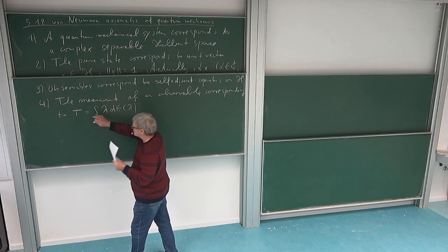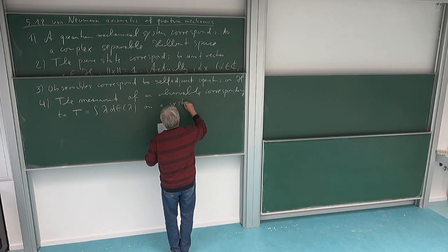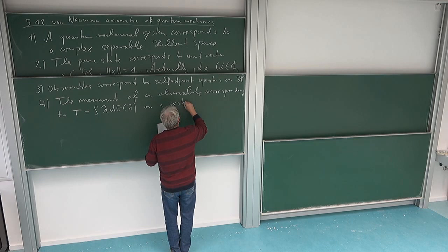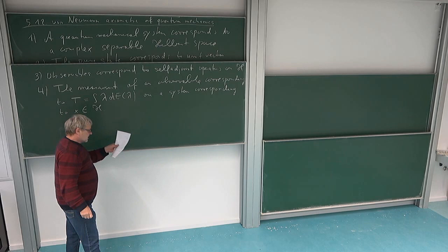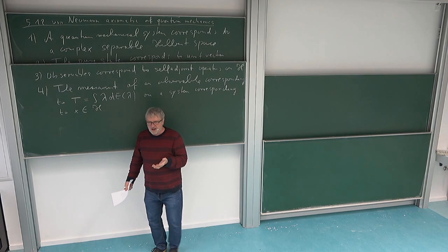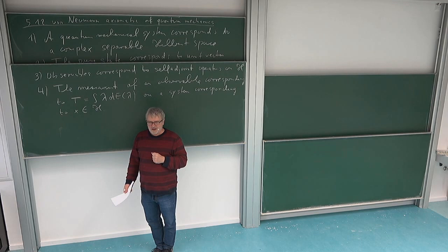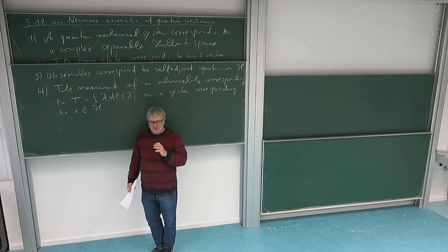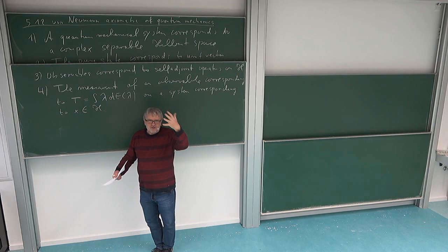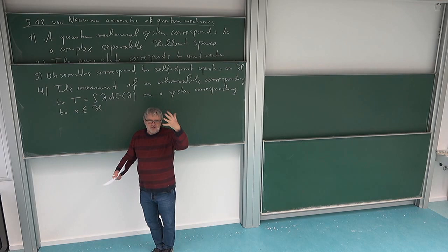I want to do a measurement of an observable corresponding to this self-adjoint operator T, measured on a system described by a unit vector x in my Hilbert space. Now comes the surprise of quantum mechanics: even though I have absolute knowledge over my system — described by the vector x — the outcome of the measurement is not uniquely determined. There are possible outcomes in general, and I only have a probability distribution for the outcome. In classical mechanics, if you have absolute knowledge about your system and make a measurement, you measure exactly the prescribed value. But in quantum mechanics this is not true.